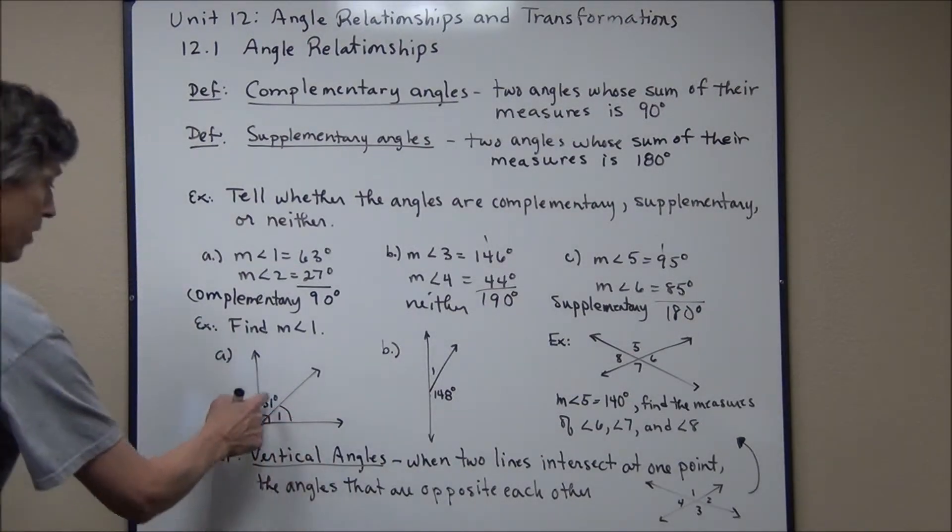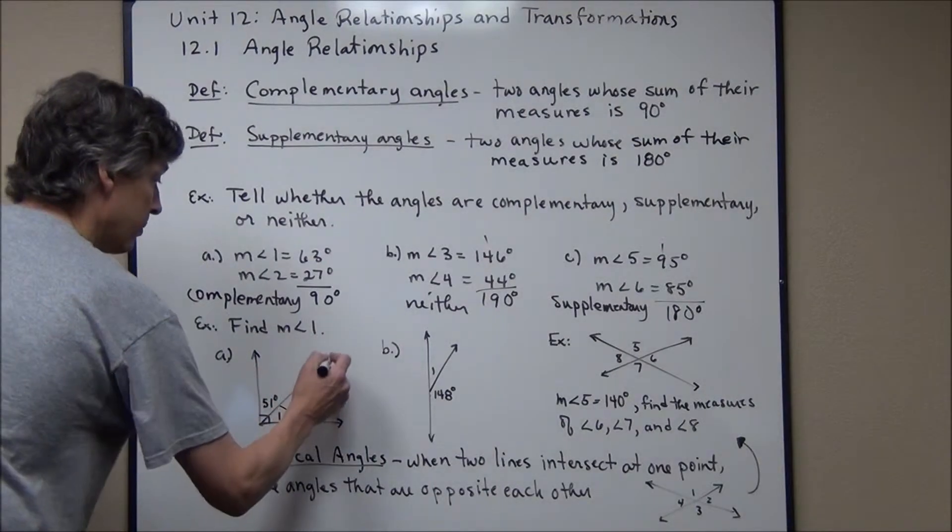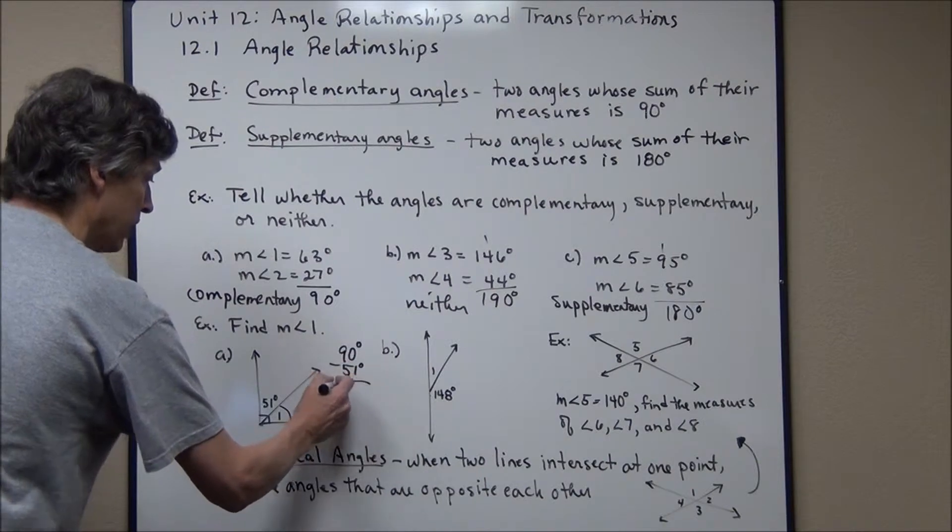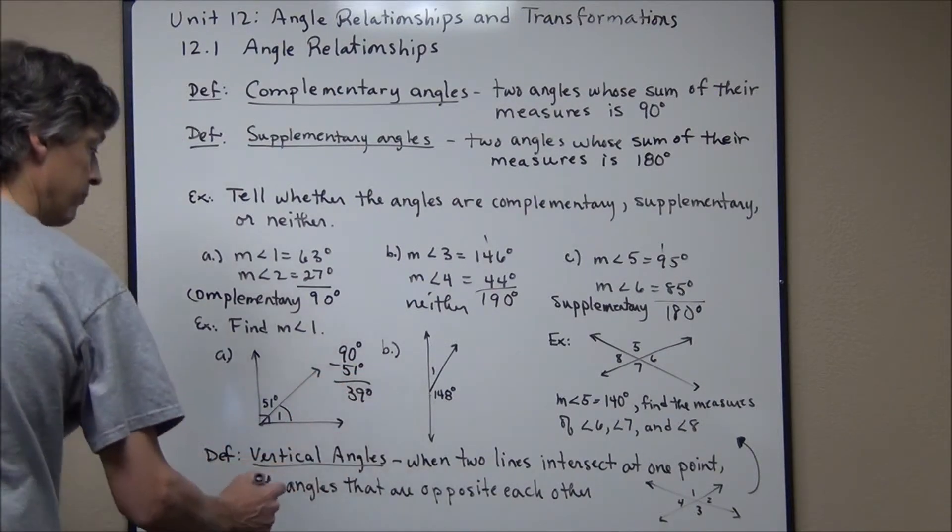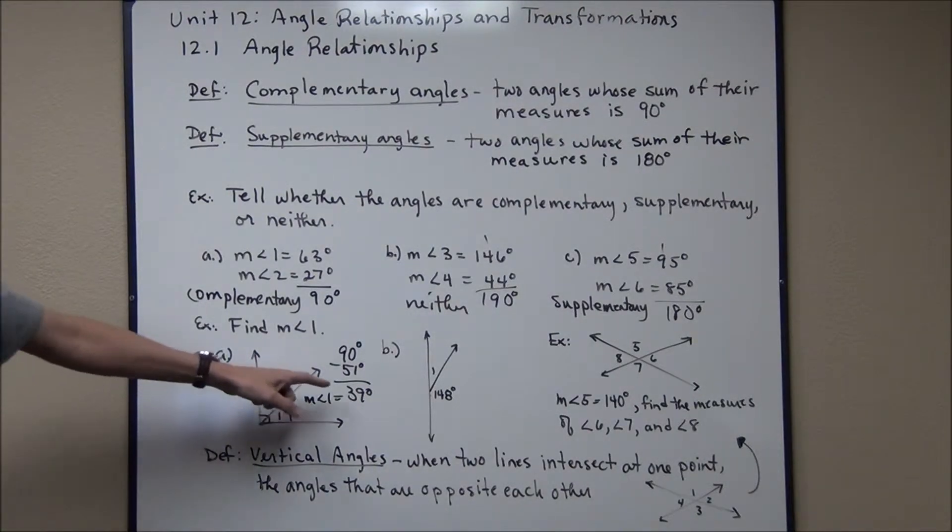Well, both of them add up to 90 degrees, then the measure of angle one would be 90 degrees minus 51 degrees, which is 39 degrees. And that's the measure of angle one, 39 degrees. At 51 and at 39 you'll get 90 degrees.